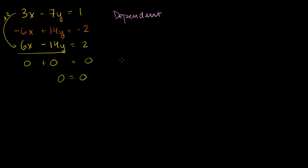So remember: when you get a clean solution, that's a consistent system. When you get something crazy like 0 equals 1, that's an inconsistent system — the lines are parallel. When you get 0 equals 0, or anything that's always true, you're dealing with a dependent system, which means these are the exact same lines even though they might look a little different. Let's verify by putting both into slope-intercept form.